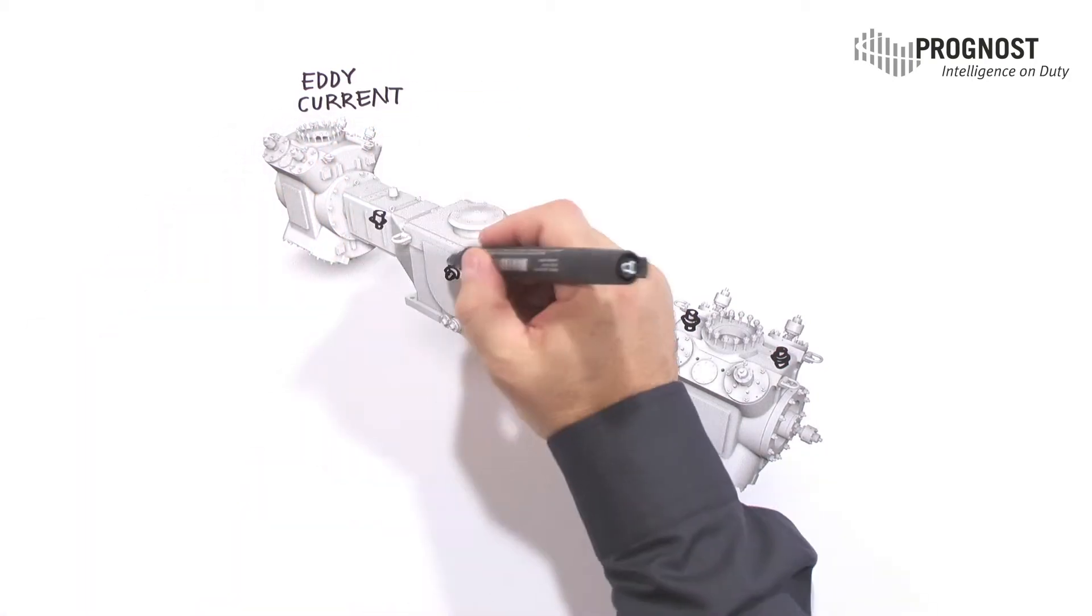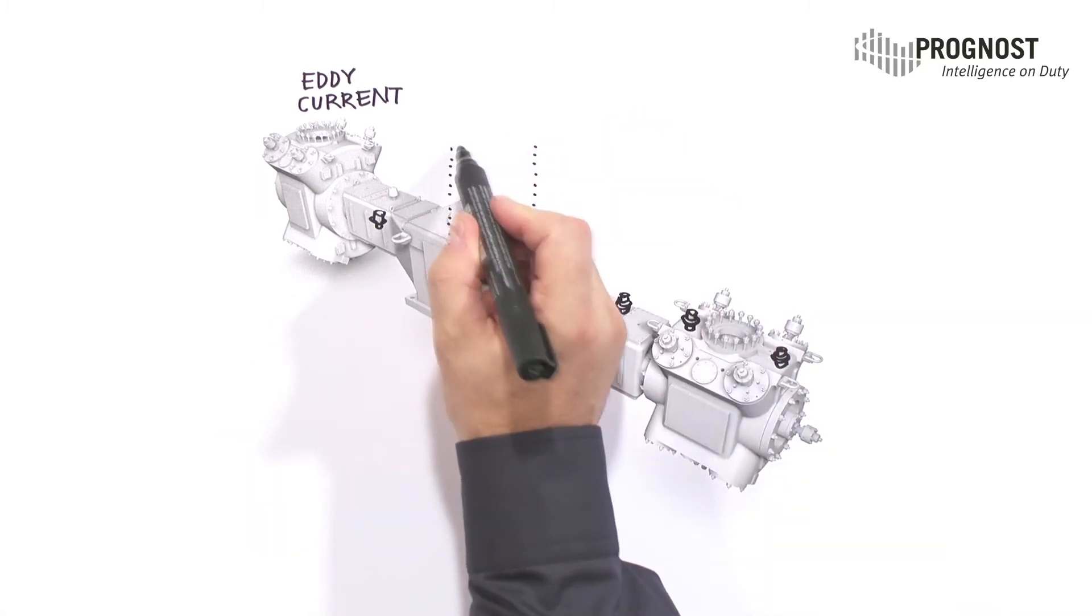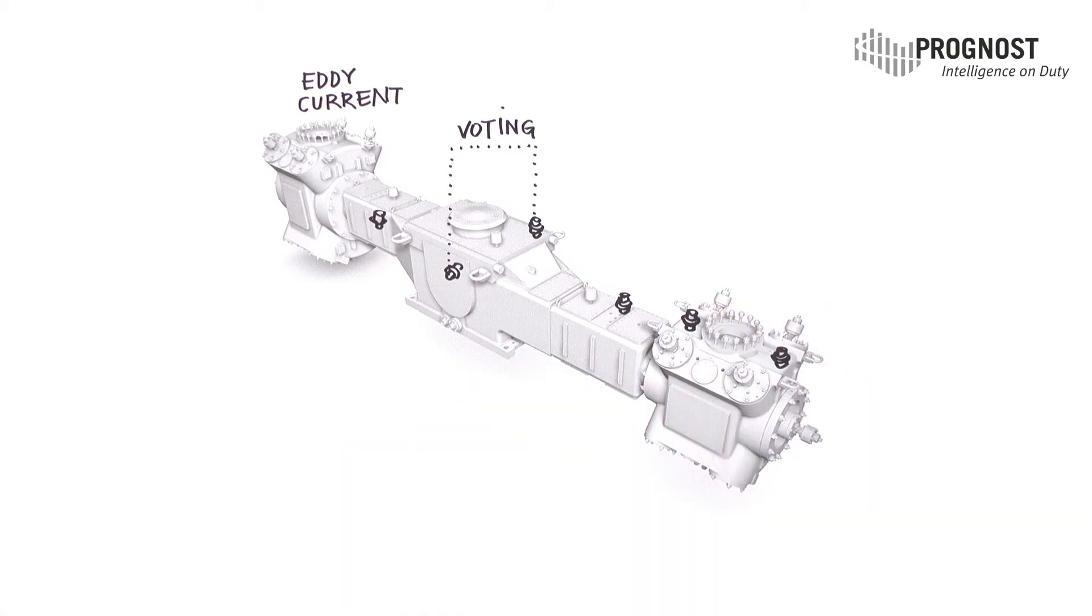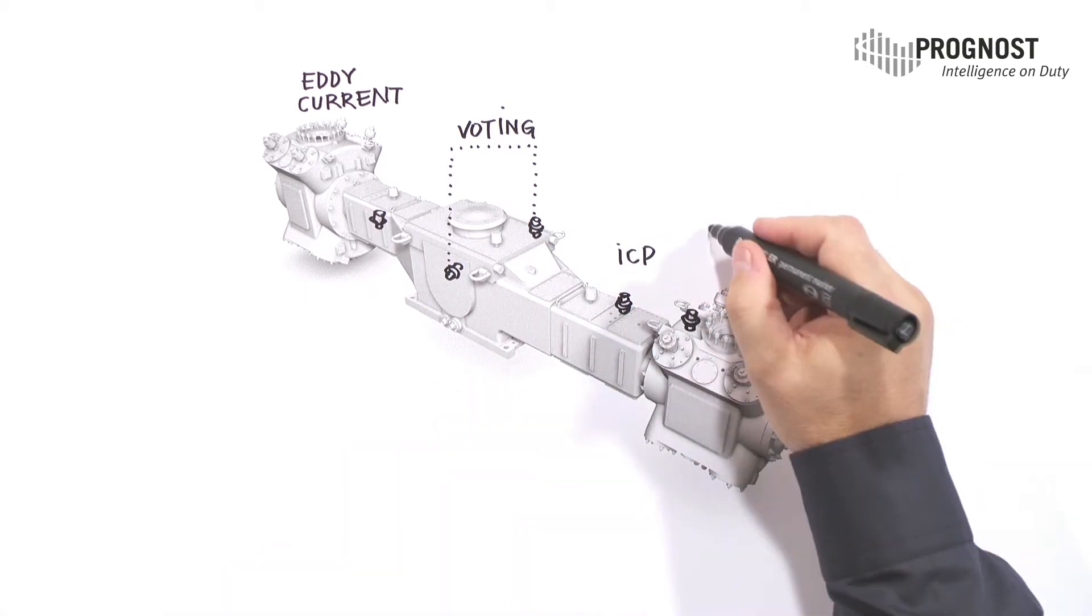Additionally, some probes are not accessible and some are installed redundantly for voting schemes and therefore need to be checked simultaneously. Not much fun for Eddie.